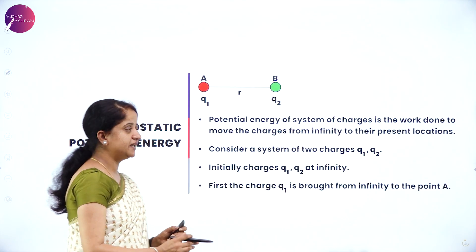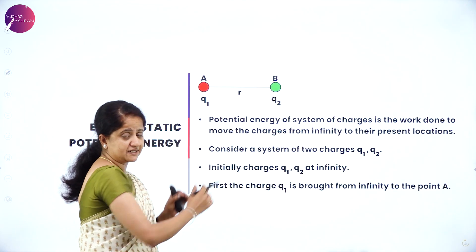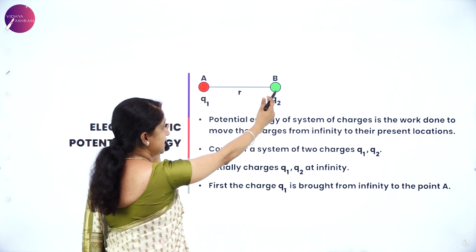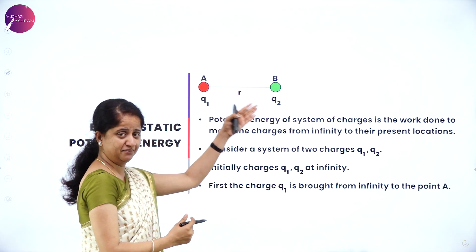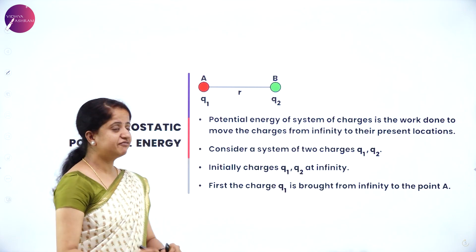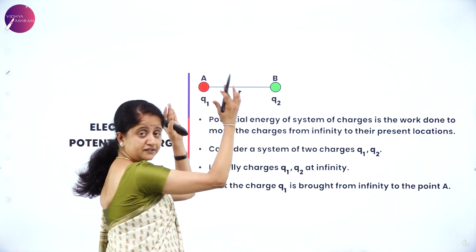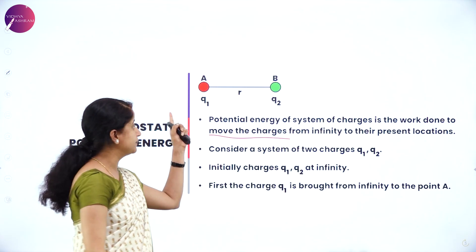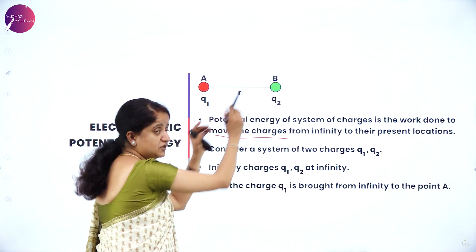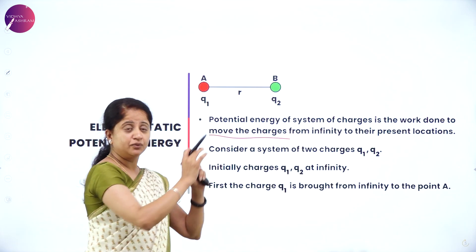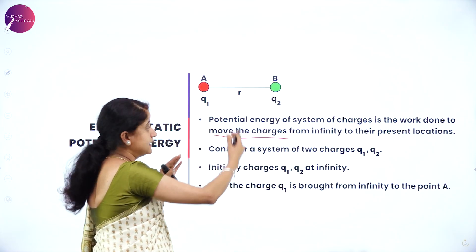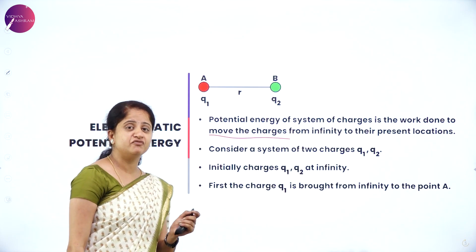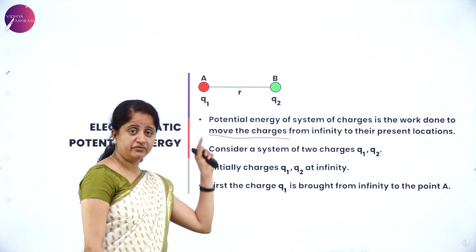Now let us apply the same concept to study the potential energy for two charges. For a single charge we know U = QV. Now we have two charges Q1 and Q2 placed at certain points A and B, separated by a distance R. The potential energy for this system of charges is the work done in moving the charges from infinity to their present locations, and this work done is stored in the form of potential energy.